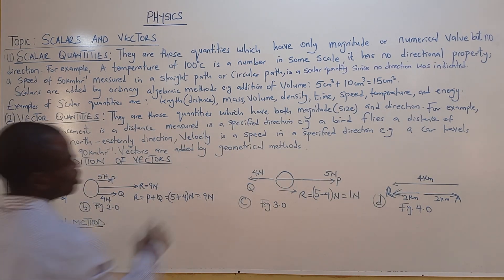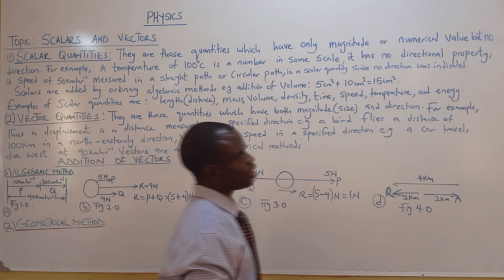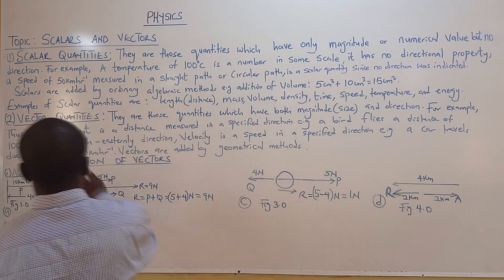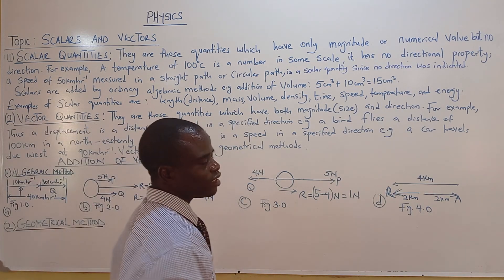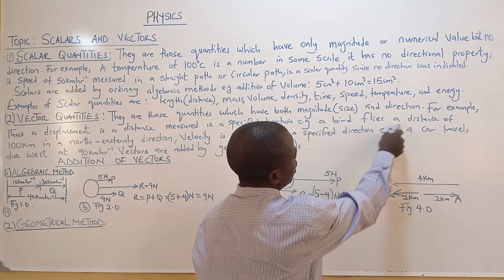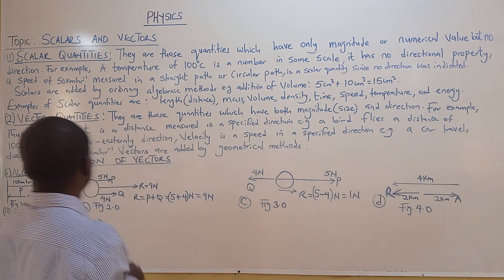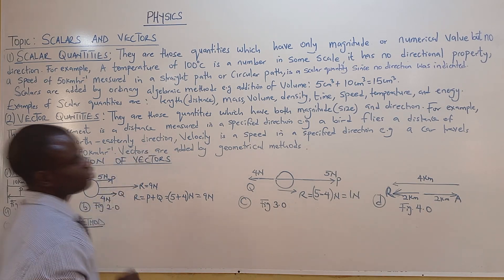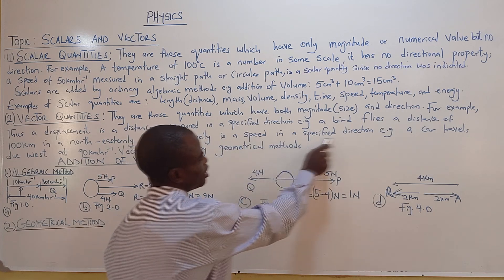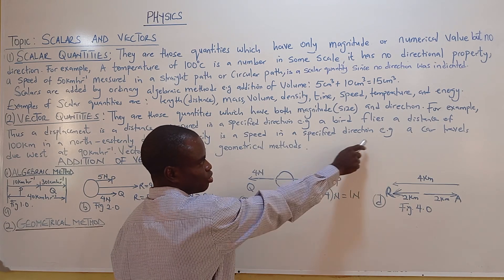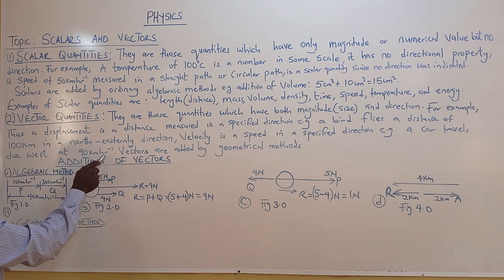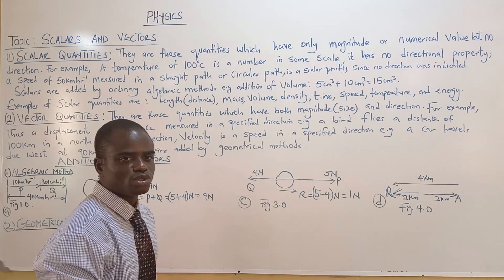Vector quantities are those quantities which have both magnitude and direction — another word for magnitude is size. For example, displacement is a distance measured in a specified direction: a bird flies 100 kilometers in a northeastern direction. Velocity is speed in a specified direction — you must state whether it is north, east, south, or west. For example, a car travels due west at 90 kilometers per hour. Vectors are added by the geometrical method.